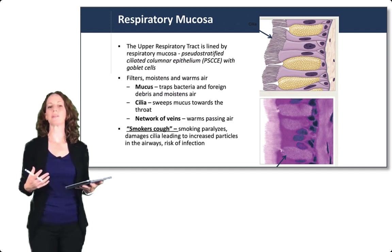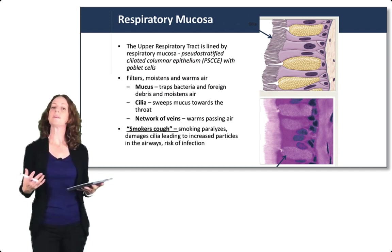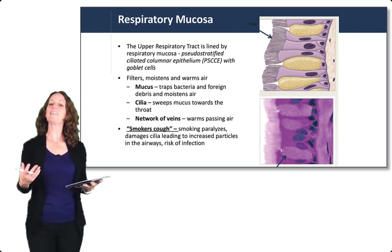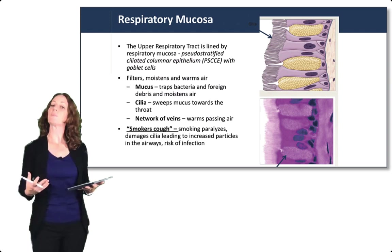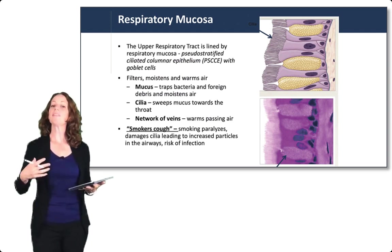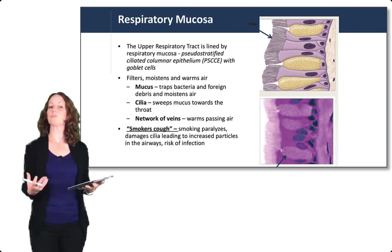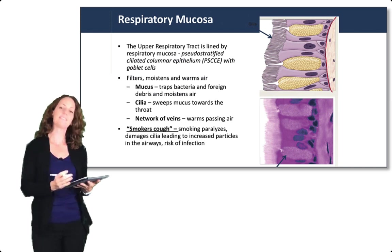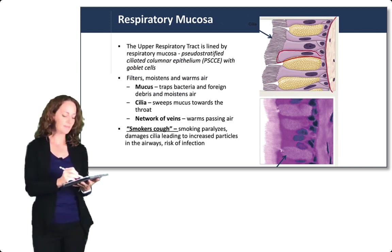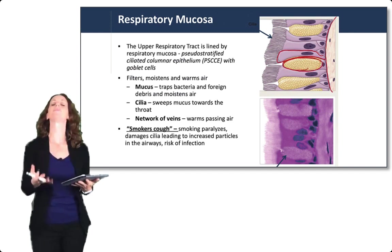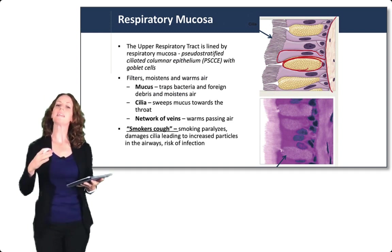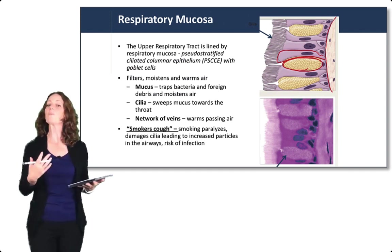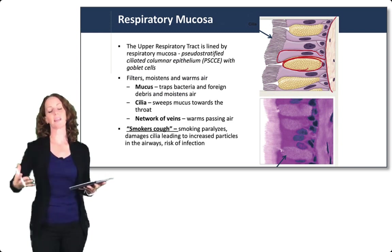As air moves through the respiratory tract, it is filtered, moistened, and warmed by the mucosa. The respiratory mucosa contains a lot of mucus, which traps bacteria and foreign debris and moistens the air. The tissue type is pseudo-stratified ciliated columnar epithelium with goblet cells — goblet cells being the mucus-producing cells. Even though it looks like multiple layers, it is only a single layer of epithelium, which is why it's called pseudo-stratified.